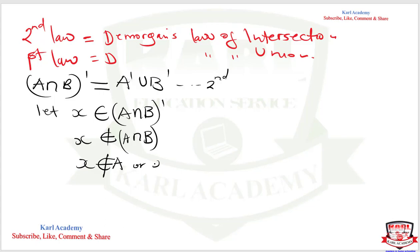...x is not a member of B. Consider the essence of intersection: to have an intersection, the elements in A and B should be common in both sets. But if the element you have is not a member of that intersection, then x is not a member of A, or the same x is not a member of B. From this we get the essence of union.